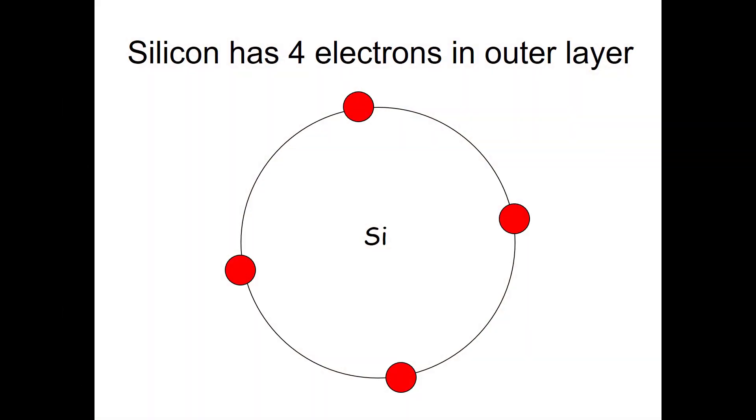We're going to start understanding semiconductors by starting with silicon. Semiconductors are really a class of elements. Elements are either conductors or insulators from an electrical point of view, but semiconductors have the unique property of sometimes being good at conducting electricity and sometimes not.